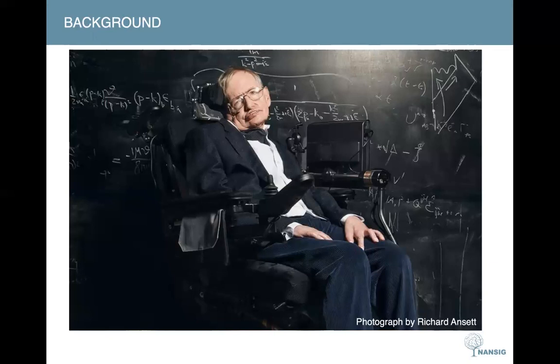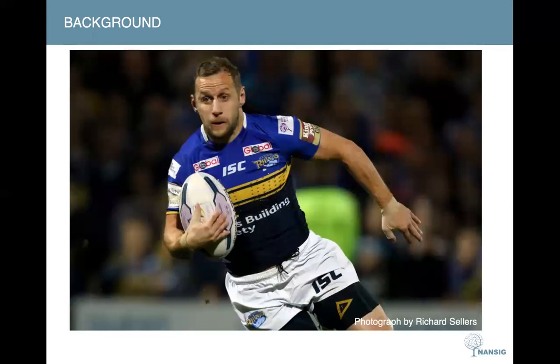Before we go into the background of motor neuron diseases, I thought it would be good to show some well-known figures who have unfortunately been diagnosed with the disease. Examples being theoretical physicist Stephen Hawking, Scottish rugby player Dodi Weir, and English rugby player Rob Burrow.